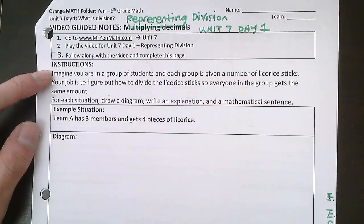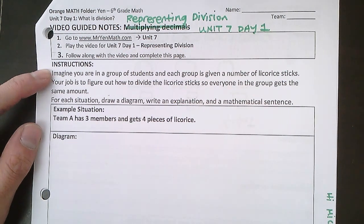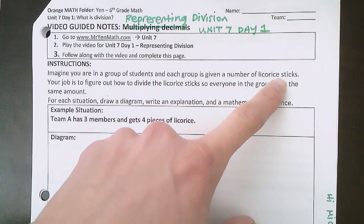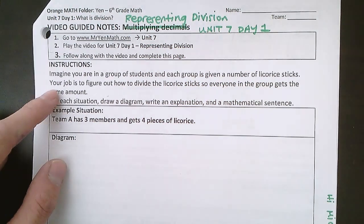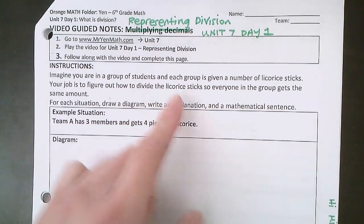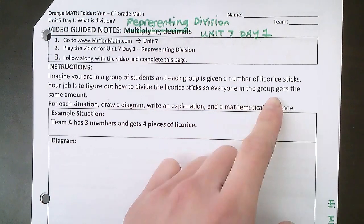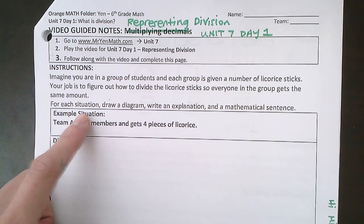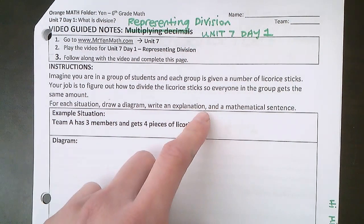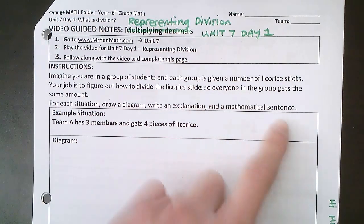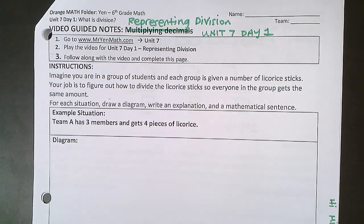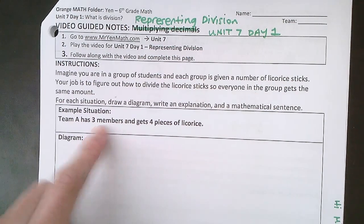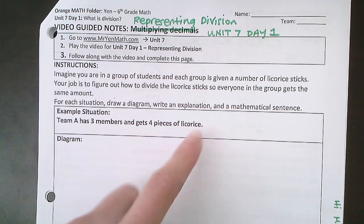Let's read our instructions. Imagine you are in a group of students, and each group is given a number of licorice sticks. Your job is to figure out how to divide the licorice sticks so that everyone in the group gets the same amount. For each situation, draw a diagram, write an explanation, and a mathematical sentence.